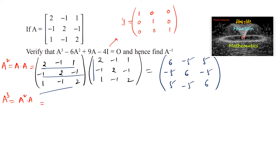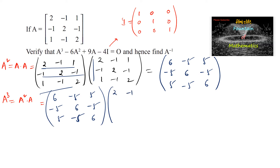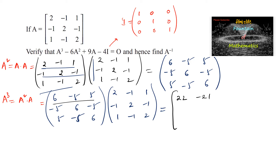Now A³ = A²×A. We multiply [6, -5, 5; -5, 6, -5; 5, -5, 6] by A = [2, -1, 1; -1, 2, -1; 1, -1, 2]. First row with first column: 12+5+5=22. First row with second column: -6-10-5=-21. First row with third column: 6+5+10=21. Second row with first column: -10-6-5=-21.